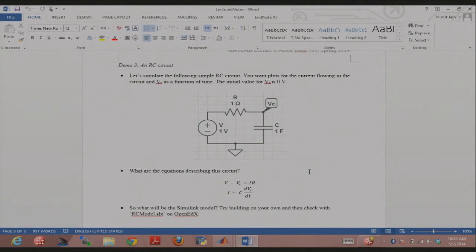The heart of it has to be an integration operation somewhere, DVC over DT. So start by putting in the integrator block and saying, okay, it's gonna output VC to me. Where is that VC going to go? It's gonna go into the first equation somewhere, and then you get current out, and then it should all join together.